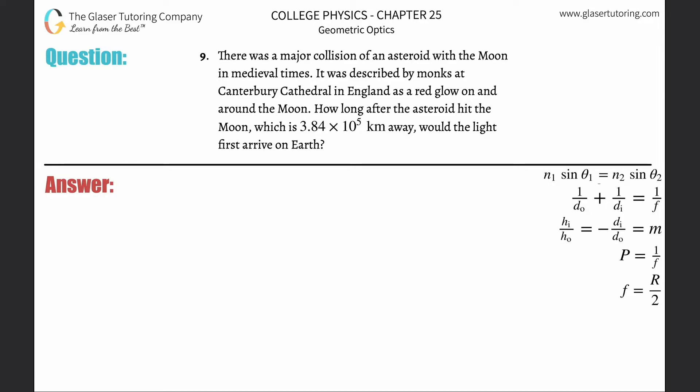Number nine: There was a major collision of an asteroid with the moon in medieval times. It was described by monks at Canterbury Cathedral in England as a red glow on and around the moon. How long after the asteroid hit the moon, which is 3.84 × 10^5 kilometers away, would the light first arrive on Earth?